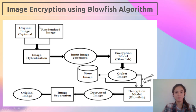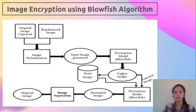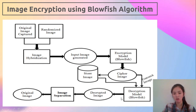Let's see one of these applications — image encryption using the Blowfish algorithm. We have the original image and a randomized image which undergo image hybridization to generate an input image. The input image is fed into the Blowfish encryption model which after post-processing gives the cipher image. The cipher image can be stored or transmitted. The cipher image is then put into the Blowfish decryption model, and after decryption we get the decrypted image, which is put through an image separation process to give back the original image.